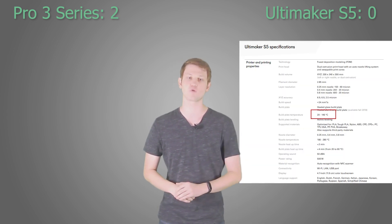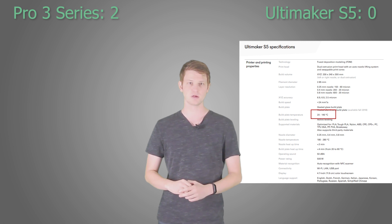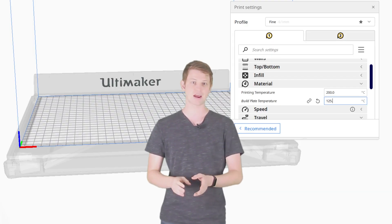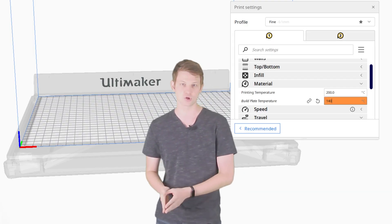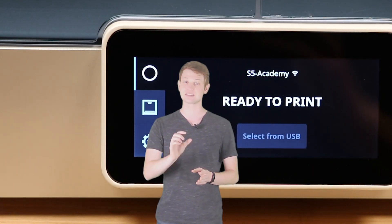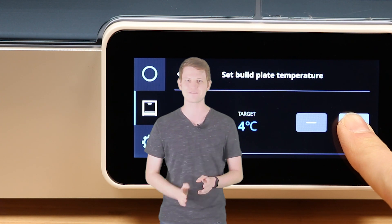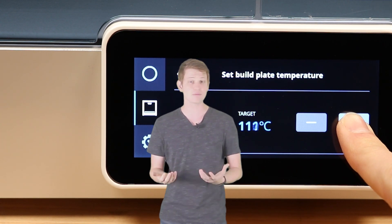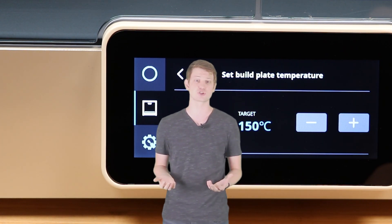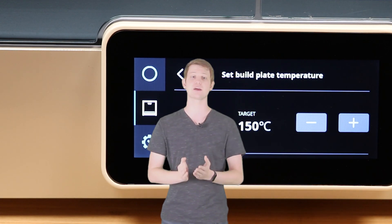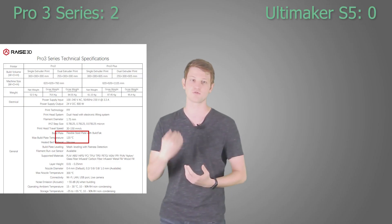The print bed temperature was a surprise, with the Ultimaker listing 140 degrees celsius as its maximum. I couldn't actually set a temperature higher than 125 degrees in Cura, but when using the S5's display to manually set the temperature, it let me enter a smoldering 150 degrees. It probably takes about a year to heat up to that temperature, but it's still significantly higher than the Pro 3 series 120 degrees.